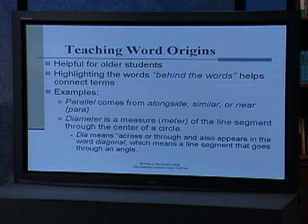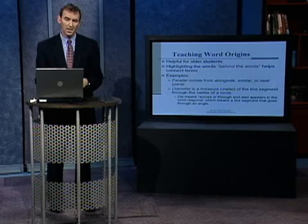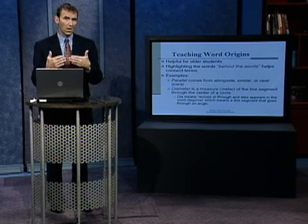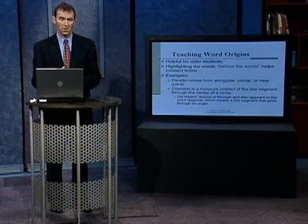A third way is teaching word origins. This is important because it's not too complicated, doesn't take a lot of time, and you'll be surprised at how often showing kids the words behind the words actually helps them make sense and make those connections we want them to make. For example, for 'parallel' — para means alongside or near. For 'diameter' — meter is a measure, and di means across or through. You can see how that helps make sense of what diameter means. Teaching word origins is primarily for older students, but what you're doing is laying the foundation of the importance of math vocabulary and getting at why it's important for kids to be able to communicate using appropriate and correct mathematical language.